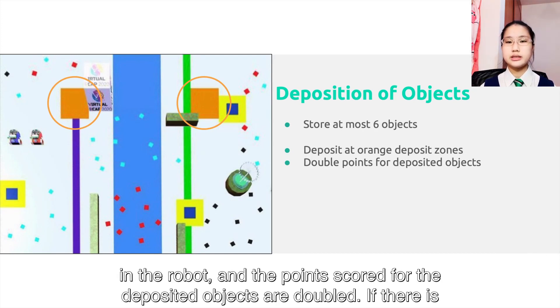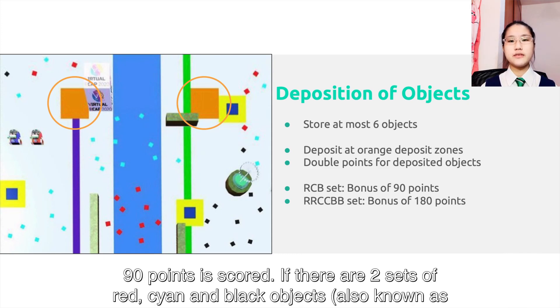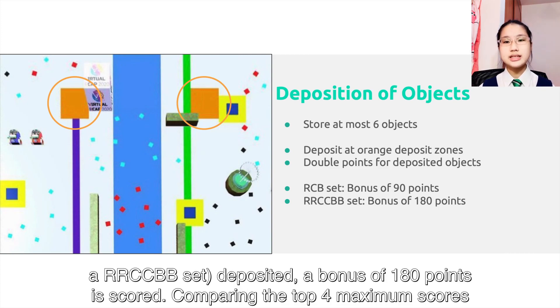If there is a set of red, cyan, and black objects, also known as the RCB set deposited, a bonus of 90 points is scored. If there are two sets of red, cyan, and black objects, also known as the RRCCBB set deposited, a bonus of 180 points is scored.